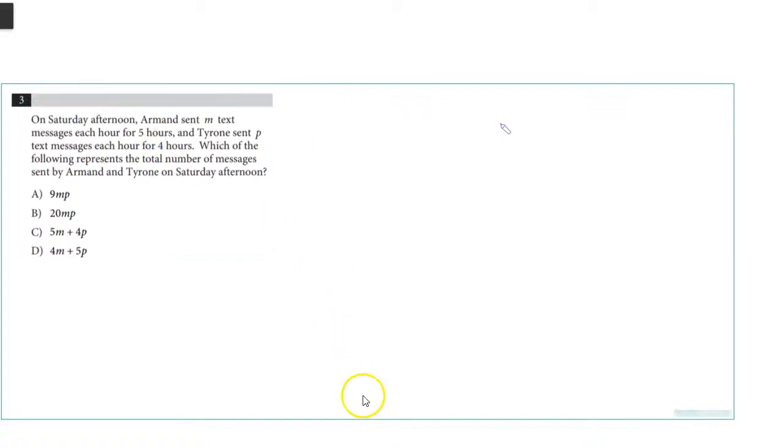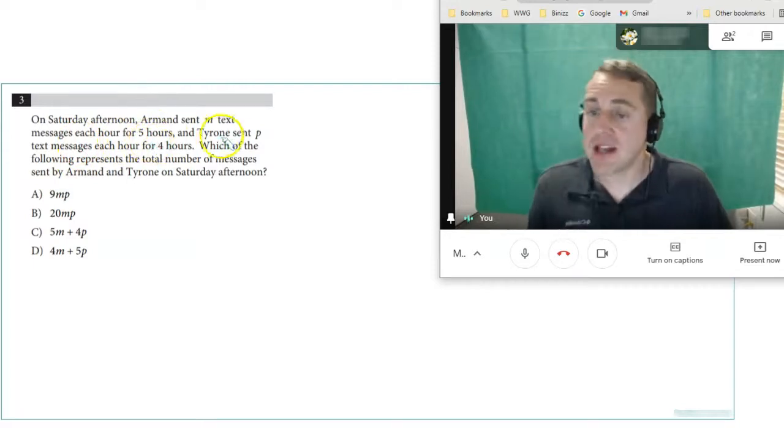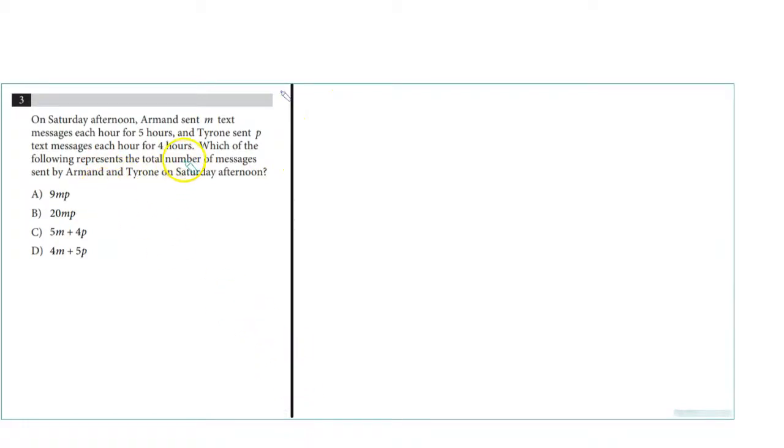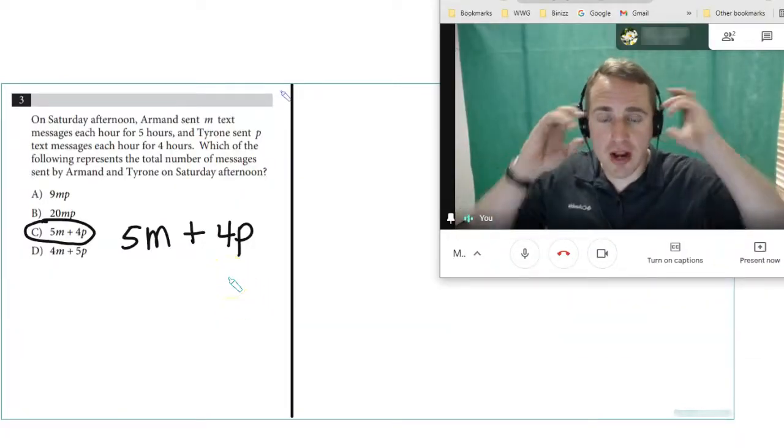Number 3: Armand sent M text messages each hour for 5 hours and Tyrone sent P text messages each hour for 4 hours. Which represents the total number of messages sent by Armand and Tyrone on Saturday afternoon? Armand is sending M messages for 5 hours, so 5 times M. Tyrone is sending P messages for 4 hours, so 4 times P. That'd be this. Don't guess. Try to really think about this.